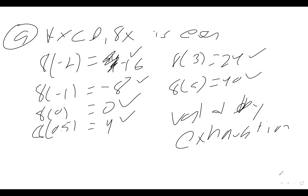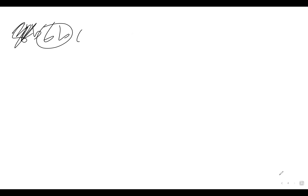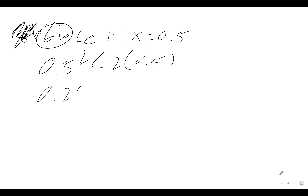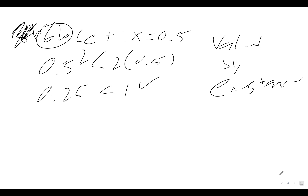For 6B: there exists an x in domain D such that x-squared is less than 2x. For an existential statement, you just have to find one example. Let x equal 0.5. Plugging in: 0.5 squared is less than 2 times 0.5, which gives 0.25 is indeed less than 1. All you have to do is find one example for an existential statement. This is valid by existence.